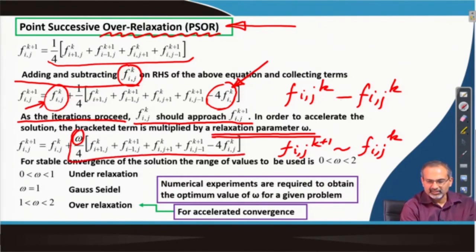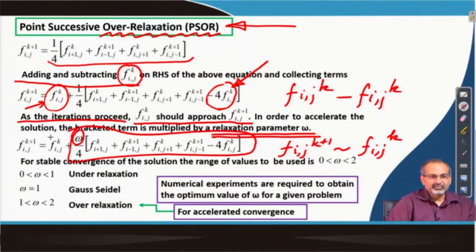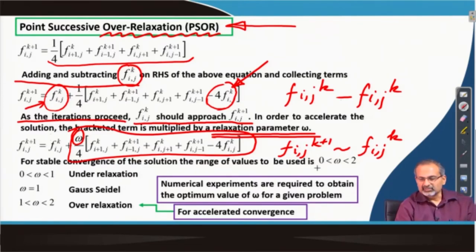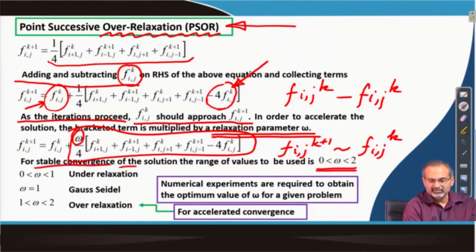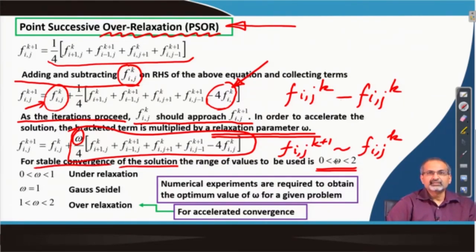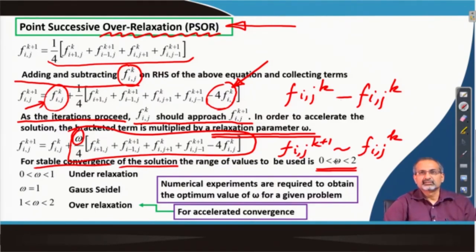The idea is to send this whole term to 0 as soon as possible by using omega to expedite the process. The obvious question is how big can omega be. From stability analysis we can actually show that the range of omega values that give stable convergence lies anywhere between 0 and 2. If you use 0 then you are not allowing the solution to progress at all. If you are using 2 you are accelerating it significantly, but you need to be just below 2 in general to keep the solution process stable.